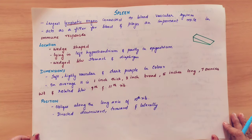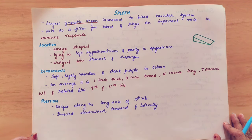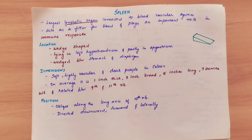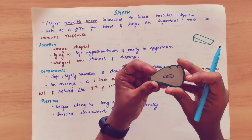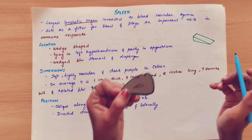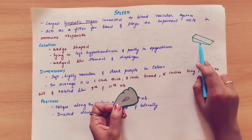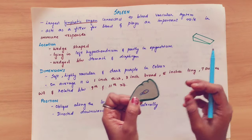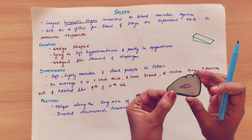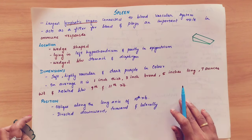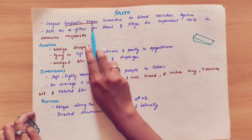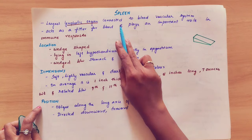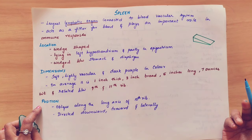Welcome to my channel. I am going to use spleen anatomy. It is a wedge-shaped organ, the largest lymphatic organ connected to the blood vascular system.